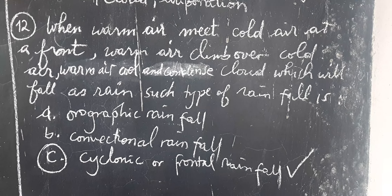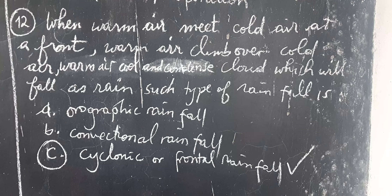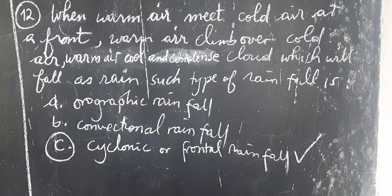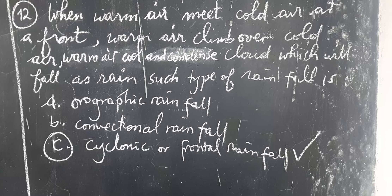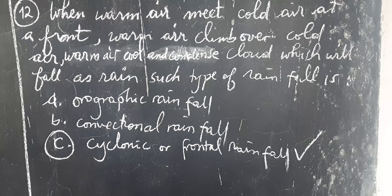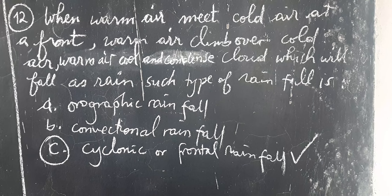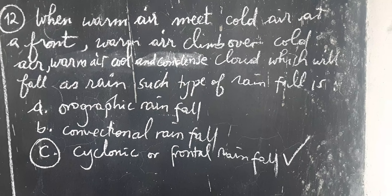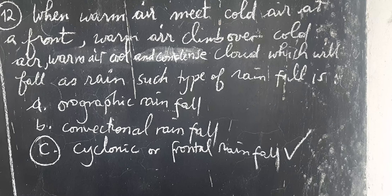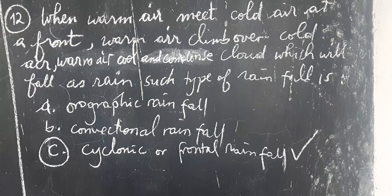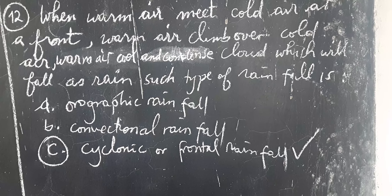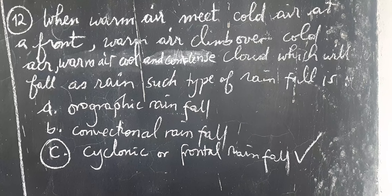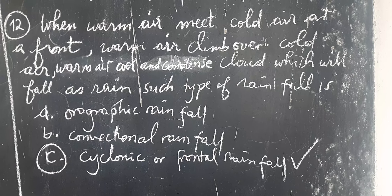Let's go to question number twelve: When warm air meets cold air at the front, warm air climbs over cold air, and the warm air cools and condenses to form a cloud, which falls as rain. Such a type of rainfall is: A. Orographic rainfall, B. Convectional rainfall, C. Cyclonic rainfall. The correct answer is C, because cyclonic rainfall is a type of rainfall which is formed when warm air and cold air meet at a front. Warm air rises over cold air, and when it reaches the atmosphere, it starts to cool and condense to form a cloud which falls as rain. So therefore, the correct answer is C, cyclonic rainfall.